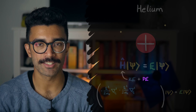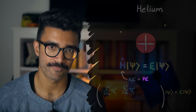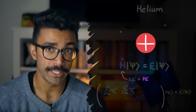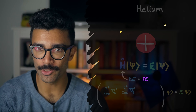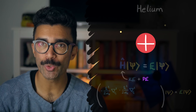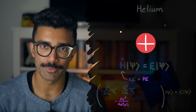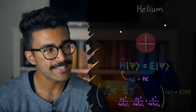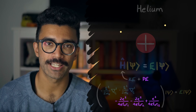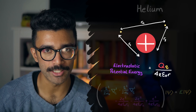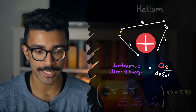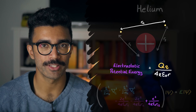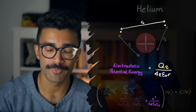The more interesting terms are the potential energy ones, which relate to the electrostatic forces between parts of the system. The nucleus has a charge equivalent to two protons — positively charged — while each electron has one unit of negative charge. Therefore the potential energy between the nucleus and the first electron is given by one term, between the nucleus and the second electron by another term, and the potential energy between the two electrons themselves by a third term. These expressions come from the classical physics formula for electrostatic potential energy.